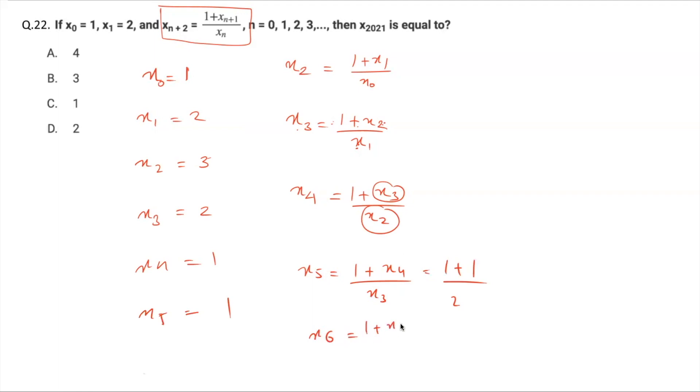Now you calculate x₆. x₆ will be 1 plus x₅ upon x₄. x₆ will be equal to 1 plus 1, x₄ is 1, so x₆ will be equal to 2. Let's calculate x₇. x₇ is 1 plus x₆ upon x₅, that will be 1 plus x₆ is 2 upon x₅ is 1, that's 3. x₇ is simply equal to 3.